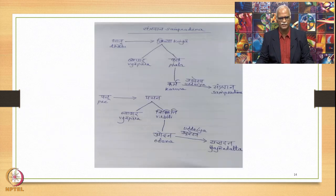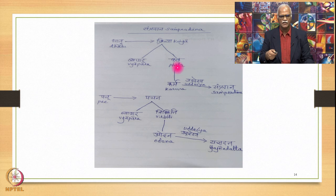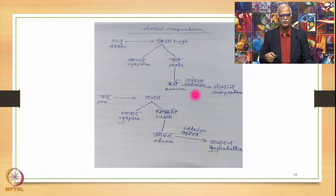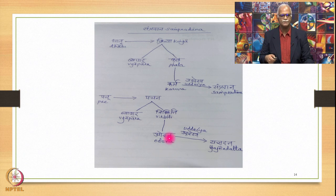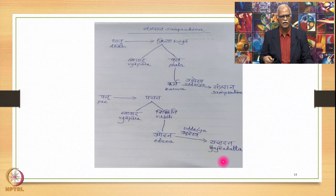Diagrammatically: a dhatu denotes kriya; vyapara and phala are its parts. The ashraya of phala is called karma, and this karma is related to an entity which has the relation of uddesya — this is called Sampradana. Taking the instance of Pacha: pachana has viklitti as its result; odana is the substratum of this viklitti, and the uddesya of this odana is Yadnyadatta. So Yadnyadatta is termed Sampradana.